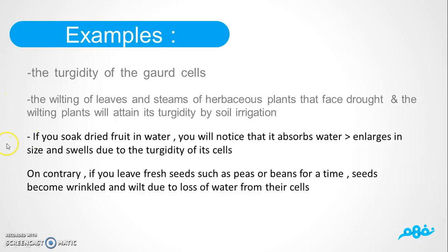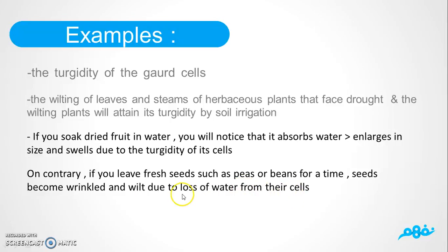The most important example: if you soak dried fruit in water, it becomes bigger in size. Why? Because its pores absorb water, and it enlarges and swells due to the turgidity of its cells. But if you leave fresh seeds such as peas or beans for a time without any water, the seeds become wrinkled and wilt, due to loss of water from their vacuoles.